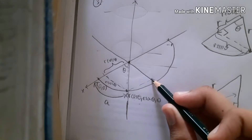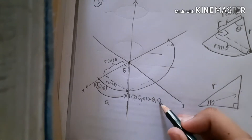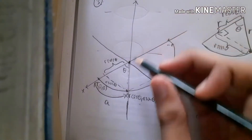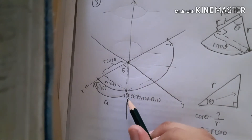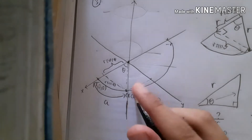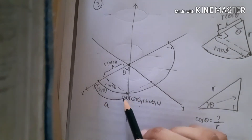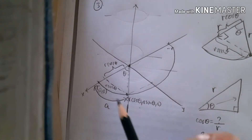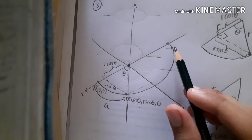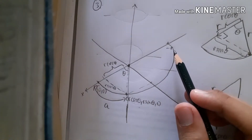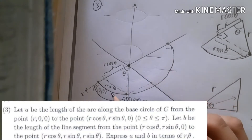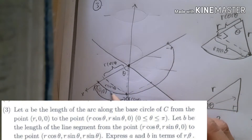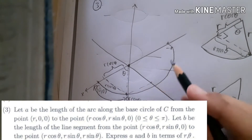The point is R cosθ in the y-axis and zero in the z-axis — it has no height, it is only a point. So this point is R cosθ, R sinθ, and zero. Take note that this point R cosθ also lies on the arc of the circle, because the question says A is the length of the arc along the base circle — so the arc goes from here to here.